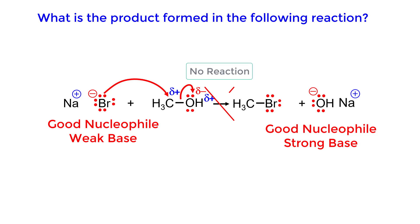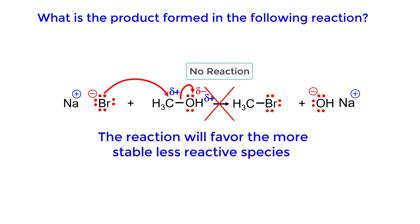This reaction would not proceed to products. Just like acid-base reactions, the reaction will favor the more stable, less reactive species. The hydroxide ion is a much stronger base than the bromide ion. The carbon-oxygen bond is much stronger than the carbon-bromine bond.